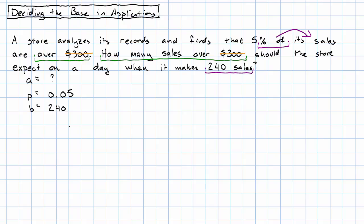How did we identify those 240 sales as the base? Well, we first said, percent of what? And just looking at the wording, it says percent of total sales. And then we looked through the rest of the problem and said, do I know how many total sales? And reading through the problem, yes, 240. That's how we identified the base as 240.